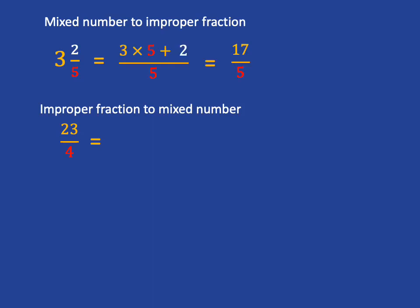To get 3 and 2 fifths into an improper fraction, you say 3 times 5 to get the number of fifths in three wholes, and then you add on 2, so you get 17 fifths. To do 23 over 4 into a mixed number, you say 23 divided by 4 gives you 5 remainder 3, so it's 5 and 3 quarters.